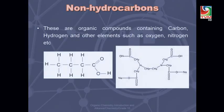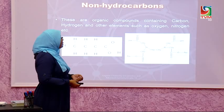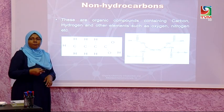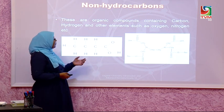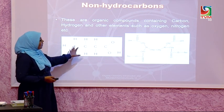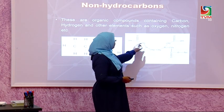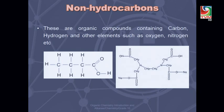Non-hydrocarbons are compounds containing carbon and hydrogen, but in addition they can have a different element like oxygen, nitrogen, sulfur, or phosphorus. These are the elements usually found in organic compounds when they are non-hydrocarbons. Look at this structure — it has carbon and hydrogen, but it also has oxygen atoms, so this is a non-hydrocarbon. This other compound also has oxygen and nitrogen, so that is also a non-hydrocarbon.